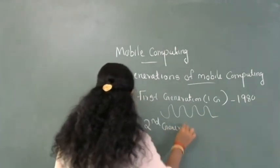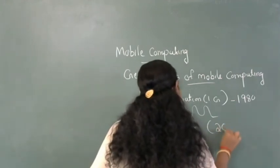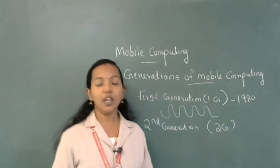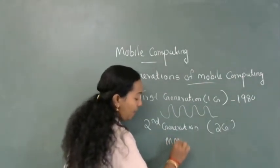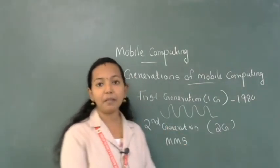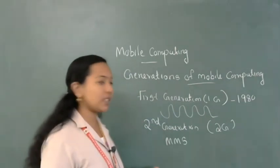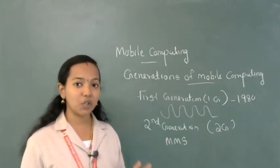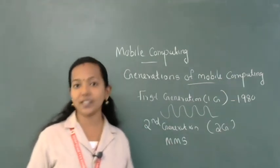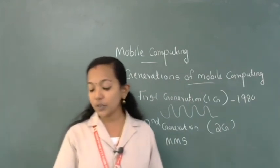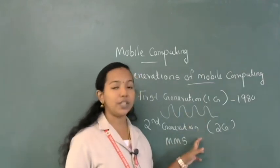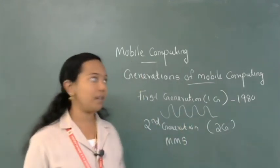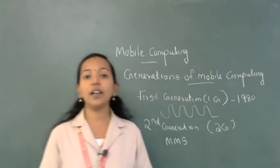After first generation comes second generation, also known as 2G. In 2G mobile communication, the concept of MMS was introduced — MMS means Multimedia Messaging Service — meaning along with voice data we can also send pictures. The 2G network follows a digital system, converting analog signals into digital, which improves audio quality.